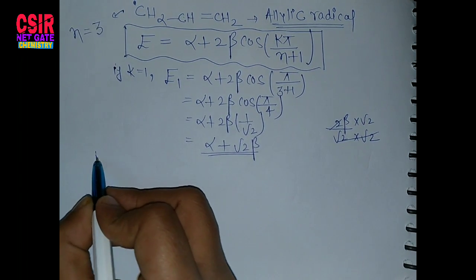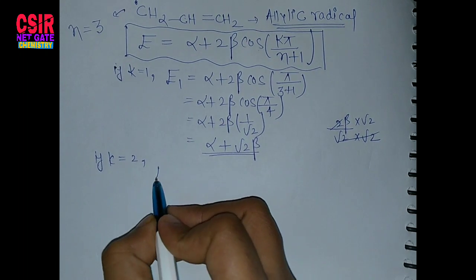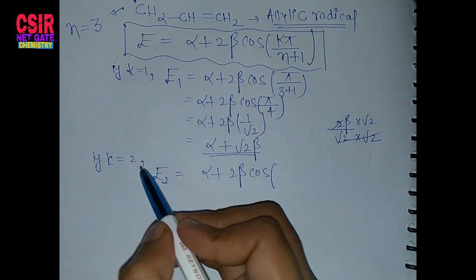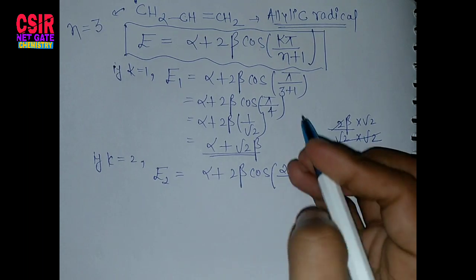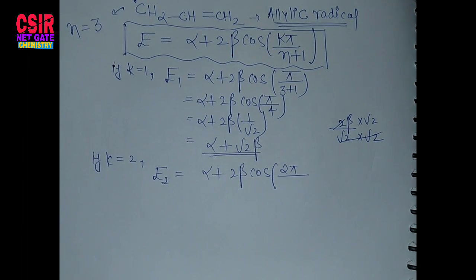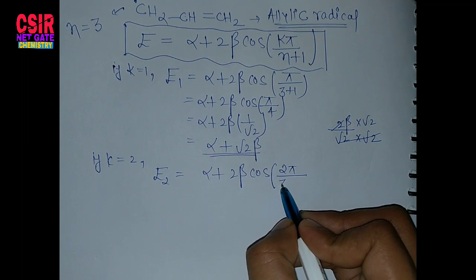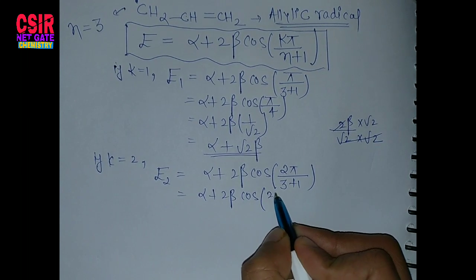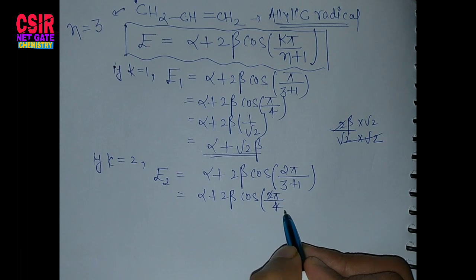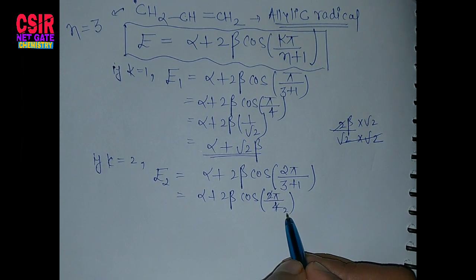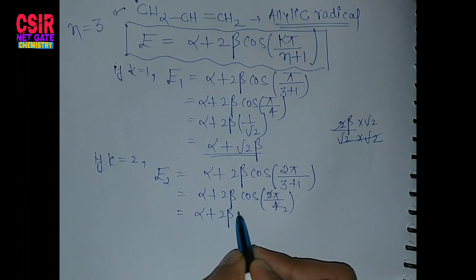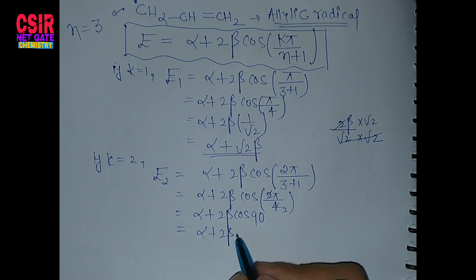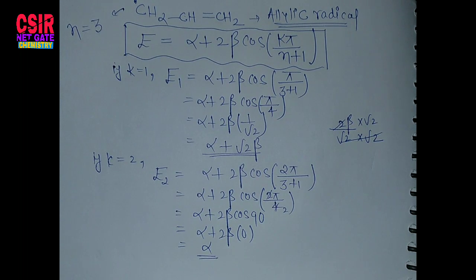If k equals 2, then E₂ equals alpha plus 2 beta times cos(2π / (3+1)) = alpha plus 2 beta times cos(2π/4) = cos(π/2) = cos 90°. cos 90° equals 0, so we have E₂ = alpha only.